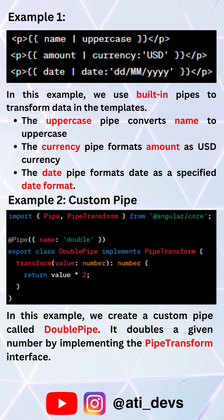Here in the first example, we use built-in pipes to transform data in the templates. The uppercase pipe converts a name to uppercase, the currency pipe formats an amount as USD currency, and the date pipe formats a date as a specified date format.